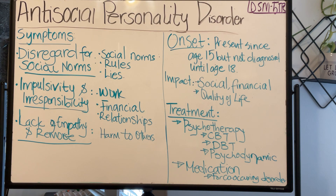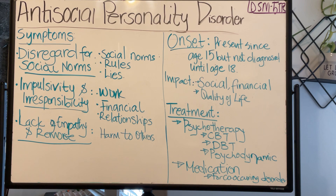Antisocial personality disorder is one of the other mental health conditions. It is going to be characterized by a pattern of disregard for and violation of the rights of others. The symptoms have to be present since age 15, but antisocial personality disorder is not diagnosed until the individual is 18 years.